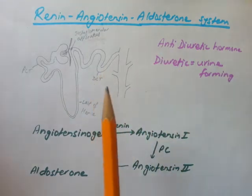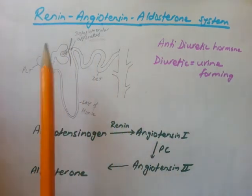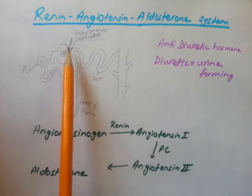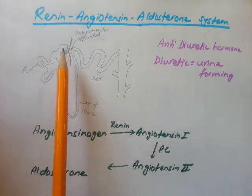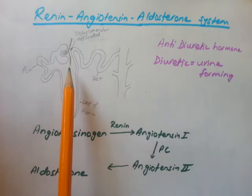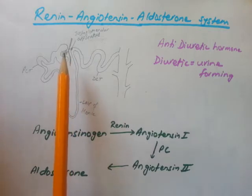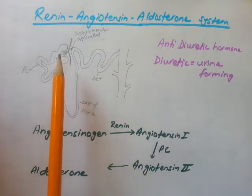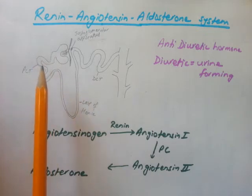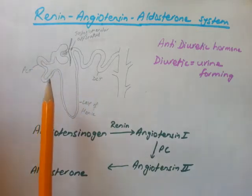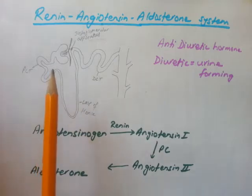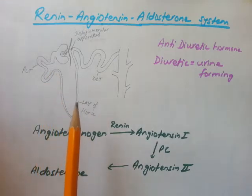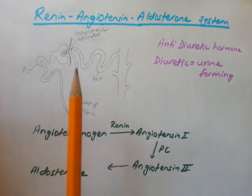Let's see how this renin-angiotensin-aldosterone system operates. Here I have drawn a structure of a nephron. We have the afferent arteriole that comes into the glomerulus and goes out at the efferent arteriole. Due to pressure, salt and water along with glucose and amino acids are filtered into the glomerulus. They go to the proximal convoluted tubule where glucose and amino acids are absorbed, then to the loop of Henle, which functions mainly in water and salt conservation.